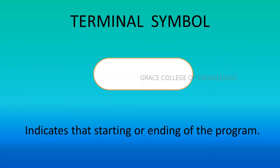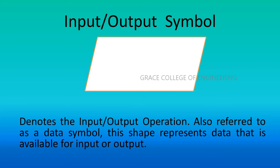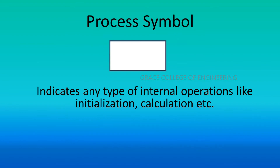Let's see what symbols are used for a flowchart. The first one is the terminal symbol, which indicates the starting or ending of the program. Next is the input or output symbol — a parallelogram — which denotes the input and output operation, also referred to as a data symbol. This shape represents data that is available for input or output. The process symbol is a rectangle, which indicates any type of internal operations like initialization and calculation.